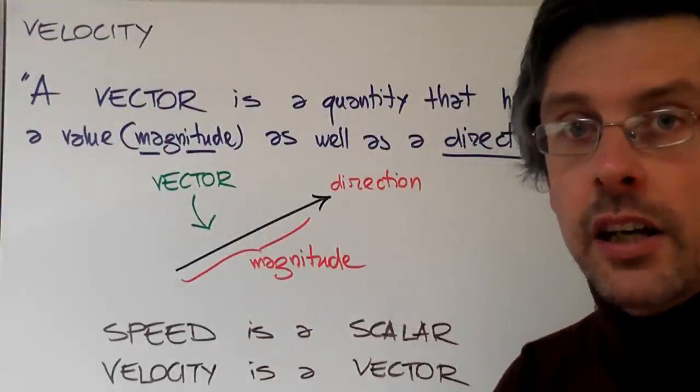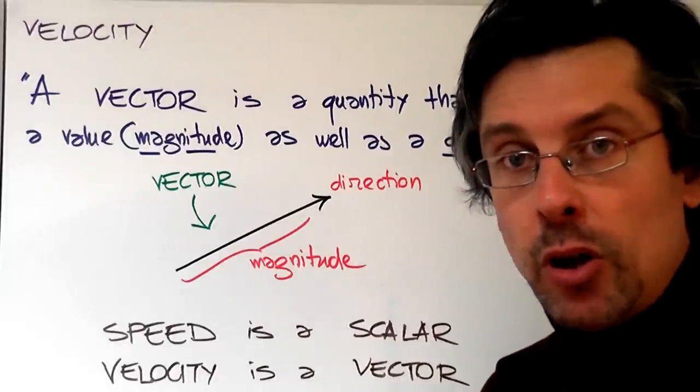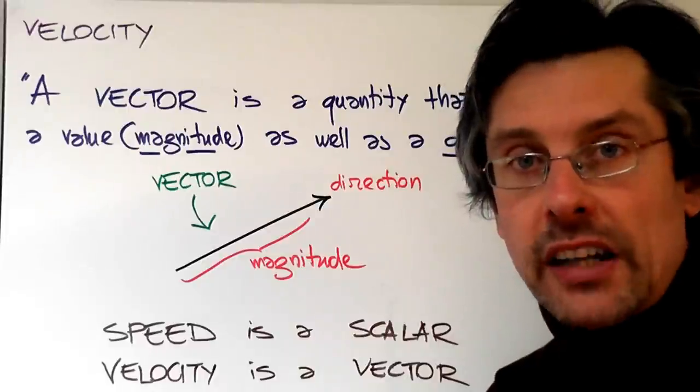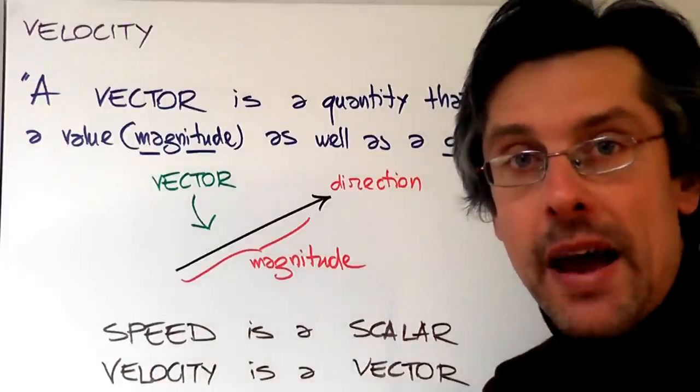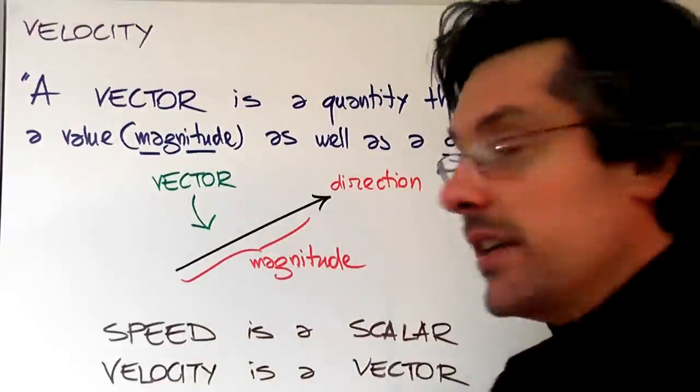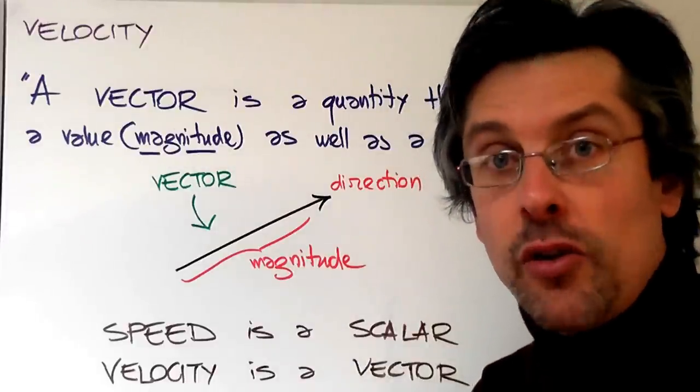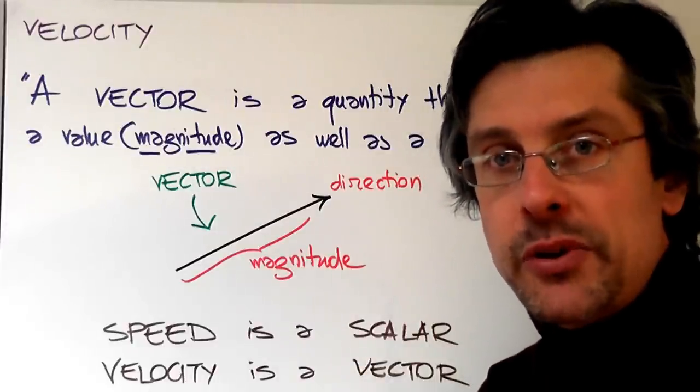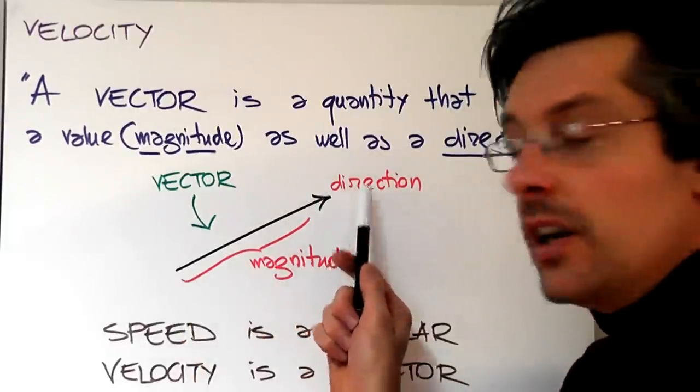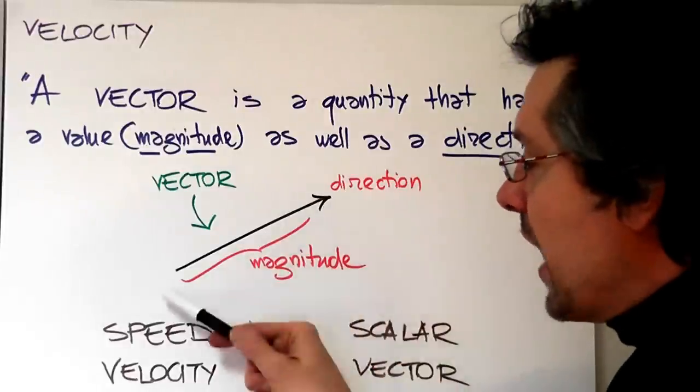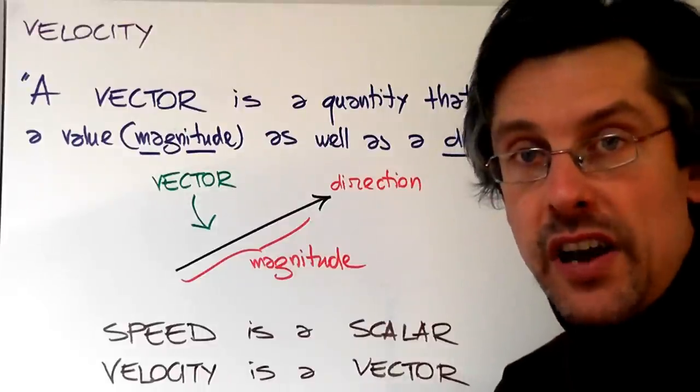Now quantities like velocity, which are defined not only by a number in the corresponding unit but also by direction, are called vectors. A vector is a quantity that has a value, and that value is called the magnitude, so how big it is, as well as a direction. And quantities like velocity, so vectors, are usually represented with an arrow. The arrow points towards the direction, and how long the arrow is is a measure of the magnitude, so the value of this vector.